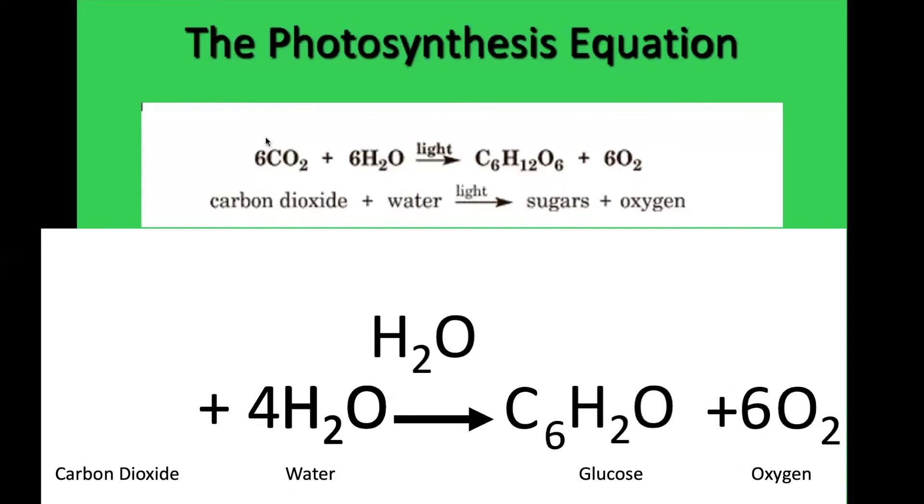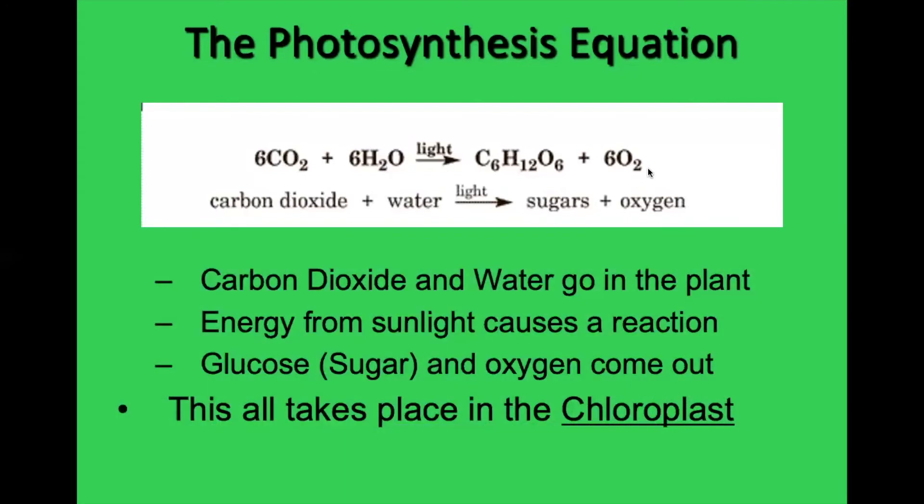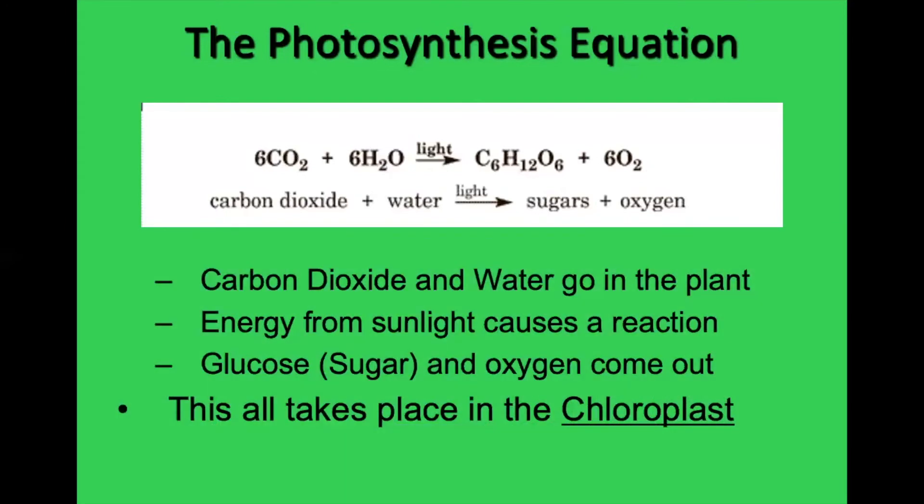And then what were we left with? What did we not use? These six O2 molecules. We did not use them. So here they are, the six O2 molecules. They're just leftover pieces. The plant doesn't want them. So the plant gets rid of them and yay, we get to breathe. And if we eat the plant, we get to eat the glucose. So this is all around good for us. Hooray. All of this, that this whole equation is going to take place in that thing we talked about, that organelle from the last video called the chloroplast.